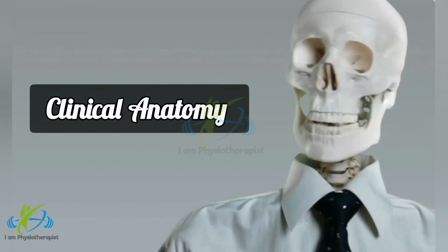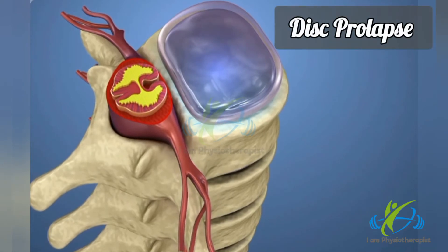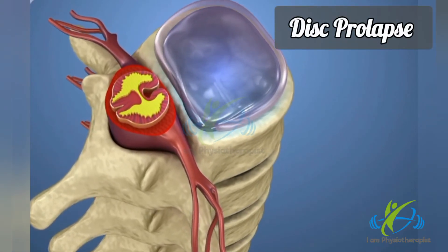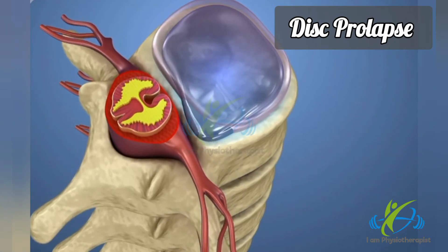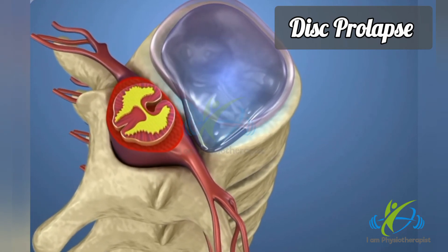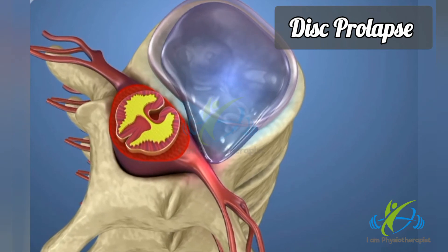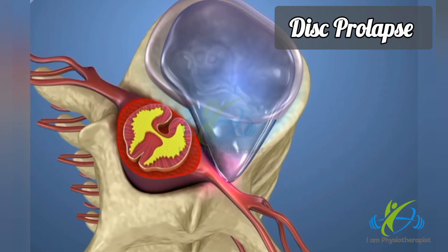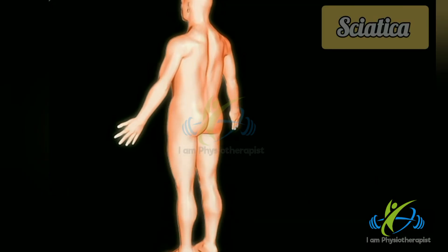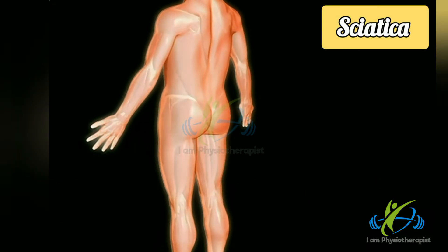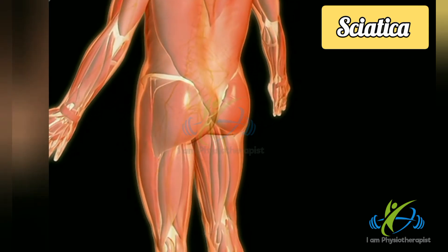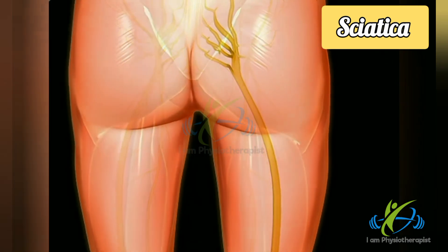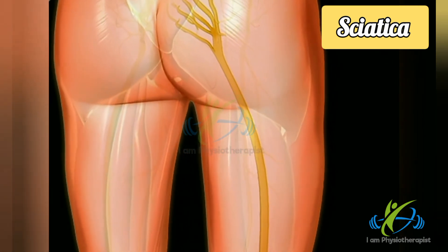Clinical anatomy. Disc prolapse: if the nucleus pulposus part of the intervertebral disc gets protruded backwards, it may press the spinal nerves leaving the intervertebral foramina. This condition is known as herniation of the disc or disc prolapse. Sciatica: if disc prolapse occurs in the lumbar or sacral region, there is radiating pain in the lower limb due to nerve compression. This condition is called sciatica.